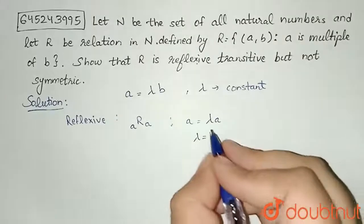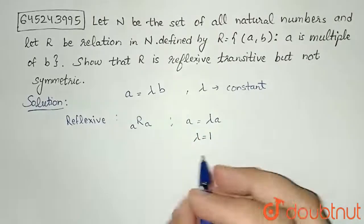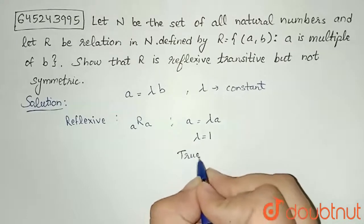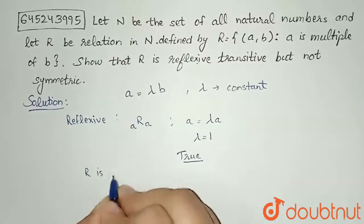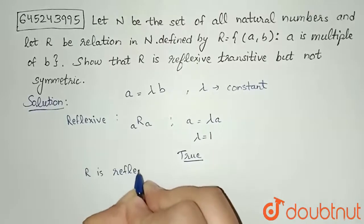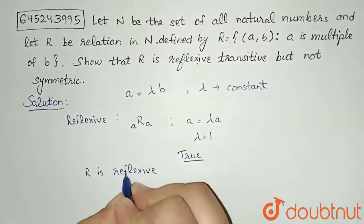That means this is true for all a belongs to natural numbers. So I am getting true here. That means my relation R is reflexive in nature. So first part is done, R is reflexive.